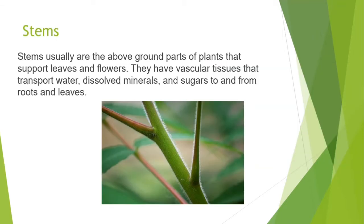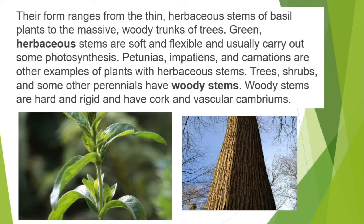Stems usually are the above-ground parts of plants that support leaves and flowers. They have vascular tissues that transport water, dissolved minerals, and sugars to and from roots and leaves. Their form ranges from the thin herbaceous stems of basil plants to the massive woody trunks of trees.